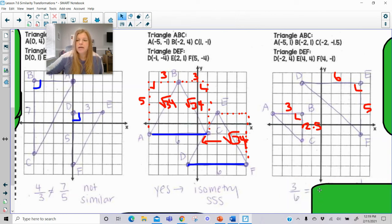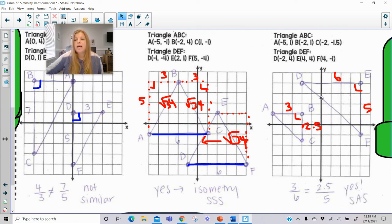So are those sides proportional to each other? So 3 over 6 would have to be equal to 2.5 over 5, which is definitely true. And they have a pair of congruent angles that's included. So by side angle side similarity, those two triangles are definitely similar to each other.